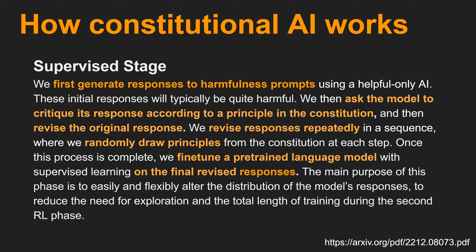Constitutional AI has mainly a two-step process. The first stage is the supervised stage. We first generate responses to harmful prompts using a helpful-only AI. These initial responses will typically be quite harmful. We then ask the model to critique its response according to the principles in the Constitution, and then revise the original response. We revise responses repeatedly in a sequence where we randomly draw principles from the Constitution at each step. Once complete, we fine-tune a pre-trained language model with supervised learning on the final revised responses. The main purpose of this phase is to easily and flexibly alter the distribution of the model's responses, reducing the need for exploration and total training length during the second RL phase.